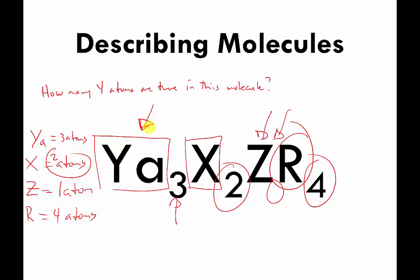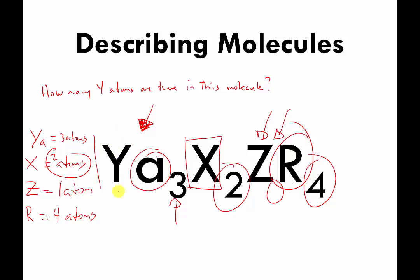The reason this slide exists is to make you realize that if you see a lowercase letter in a formula, it means that lowercase letter is part of a larger symbol. There is no Y atom in this molecule — there is a YA atom, and there happen to be three of them. So in this pretend molecule there are three YA atoms, two X atoms, one Z atom, and four R atoms all stuck to each other. Keep that in mind — you should be able to read molecular formulas like this.